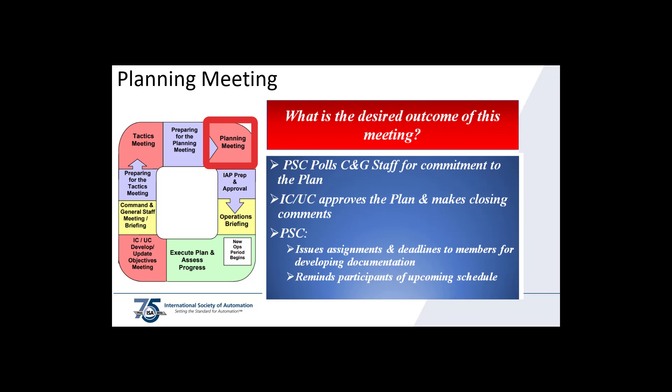Finally, the point comes where the planning section chief goes around the room asking each member of the command and general staff if they support the plan. Each member responds, 'I support the plan.' After command and general staff affirm their support, the planning section chief asks the IC or UC if he or she approves the plan. Once approved, he or she might make some closing remarks. The planning section chief then ends the meeting by reminding command and general staff of the documentation they are responsible for in building the incident action plan, and gives them a deadline as to when said documentation is due.